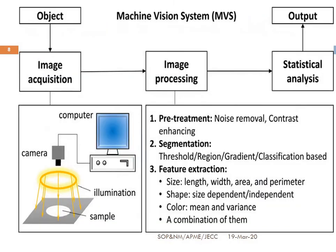This is the schematic diagram of a machine vision system. It shows image acquisition — acquiring the object image by the image acquisition unit — then input goes into the image processing unit, and next into statistical analysis, then output. In the image acquisition unit, you can see a computer, a camera, and an illumination system. The illumination system — the lighting system — connects the camera directly to the computer, and the computer records each and every value.